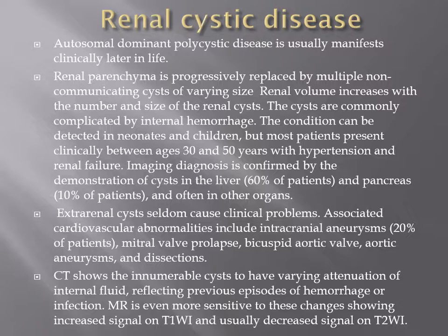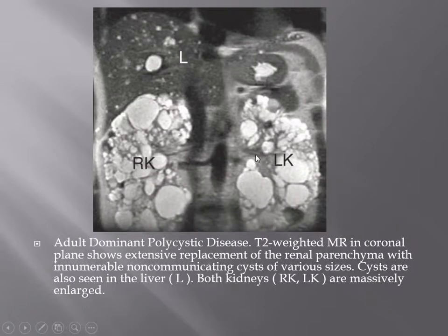Autosomal dominant polycystic kidney disease manifests later in life, between 30 to 50 years. About 60% of these patients have liver cysts, and pancreatic cysts occur in some patients. There are also extra-renal manifestations including cardiovascular abnormalities. CT shows innumerable cysts of variable size and shape. This case shows bilateral renal enlargement with replacement of normal renal parenchyma by cysts of different sizes, with multiple liver cysts also visible.